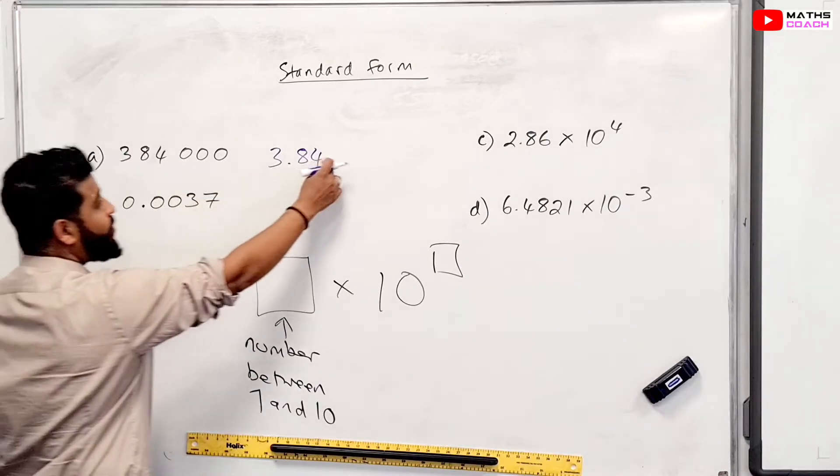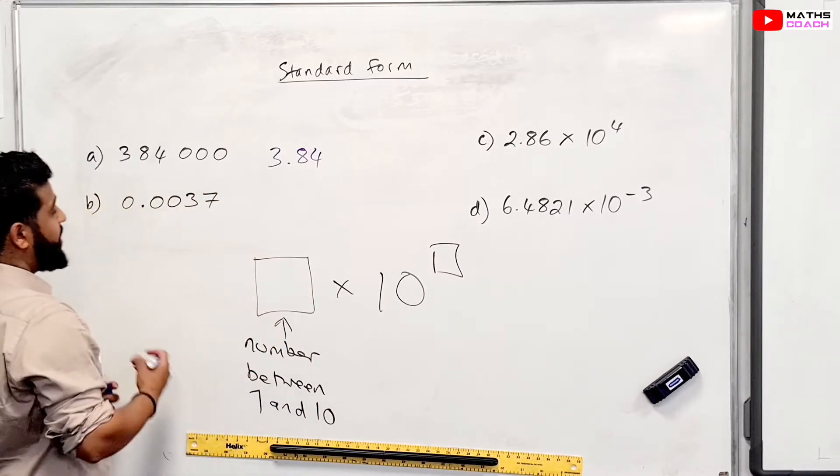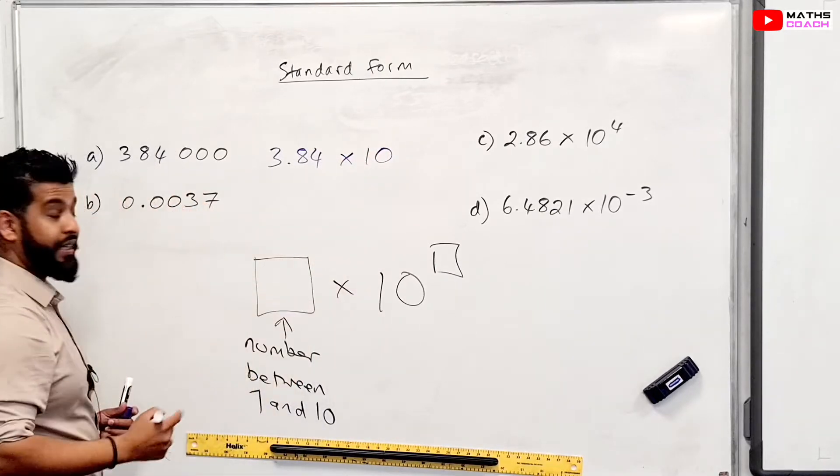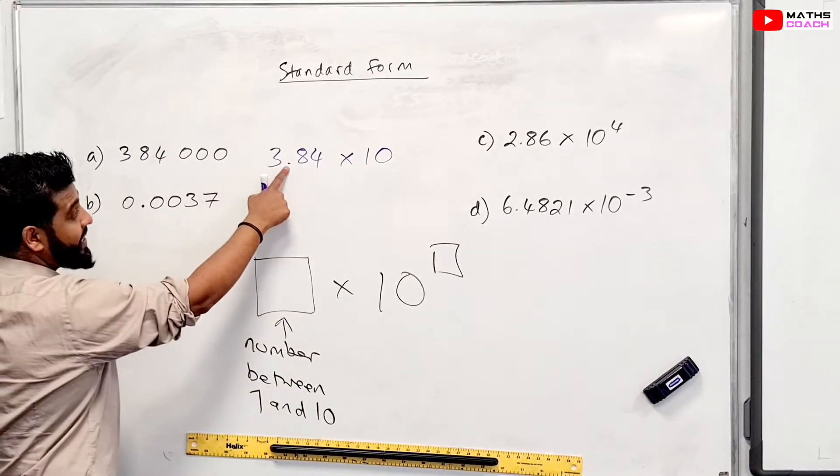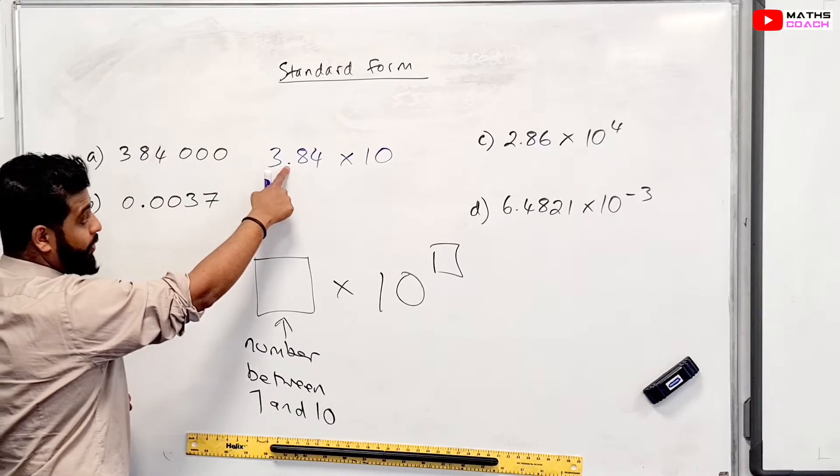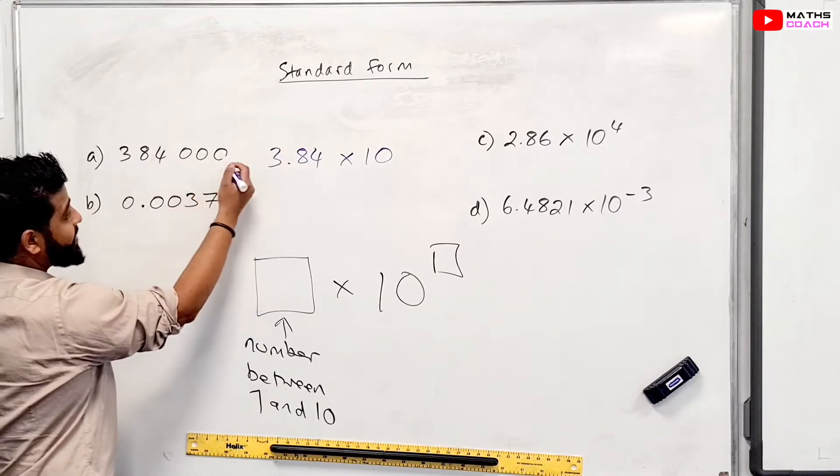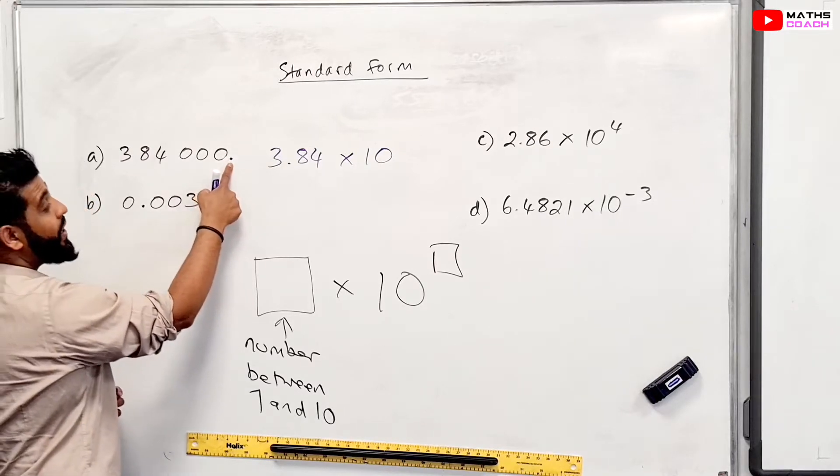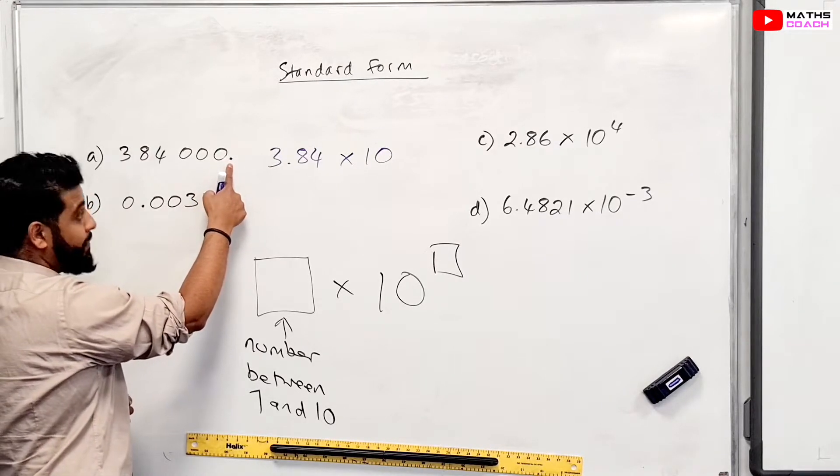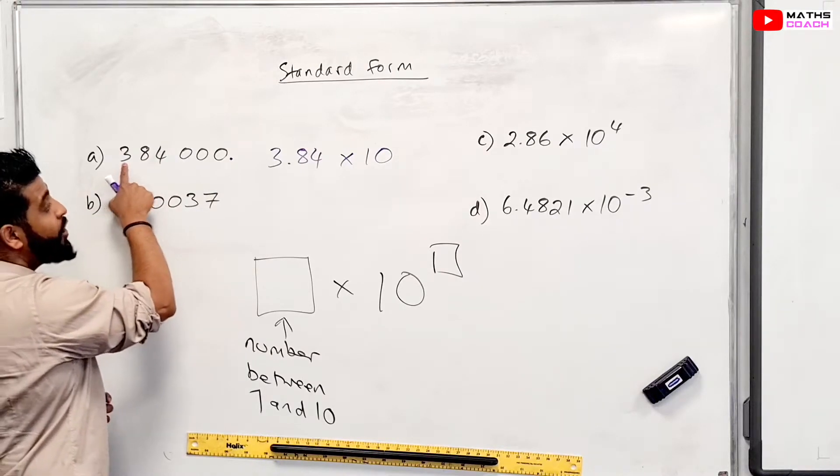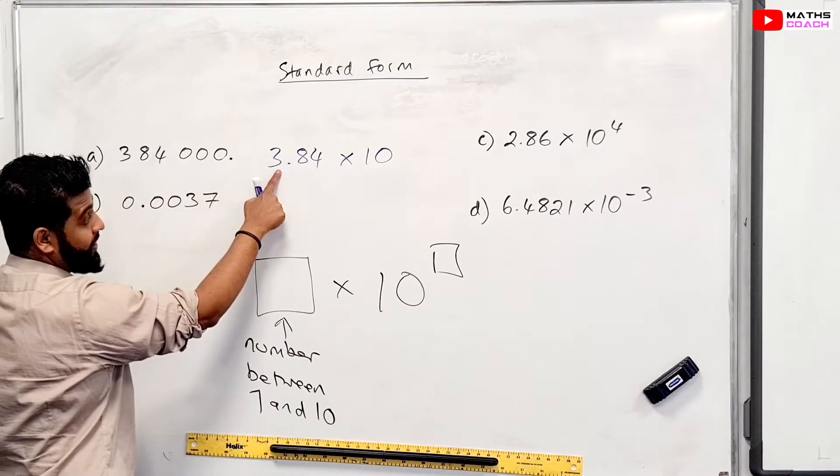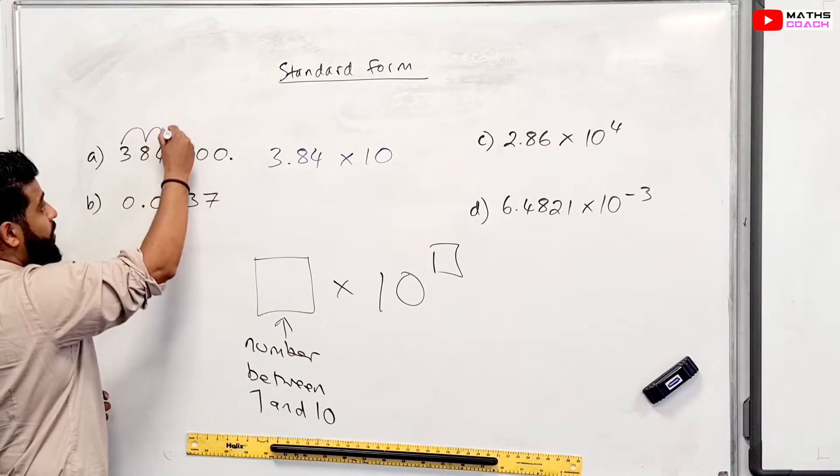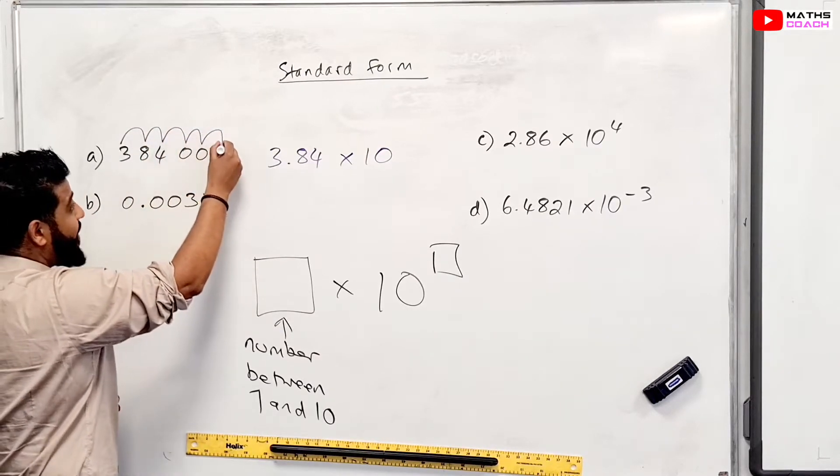Now, these zeros, I don't need to write them. I can just largely ignore them. And we're going to have times 10 to the power of something. Now, what is that something? Now, if you notice, we put the decimal place right there or the decimal point right there. Currently, the decimal place is right here. So we ask ourselves, how many steps does this 3 have to take to get to this position right there, which is right here? So it takes 1, 2, 3, 4, 5 steps.